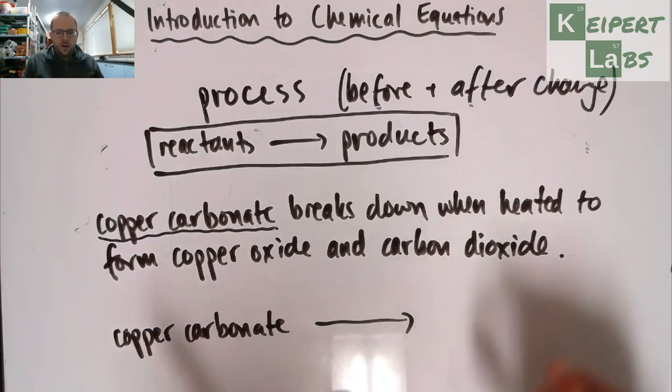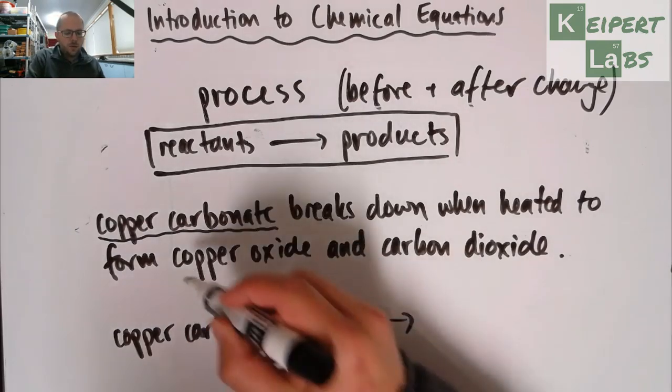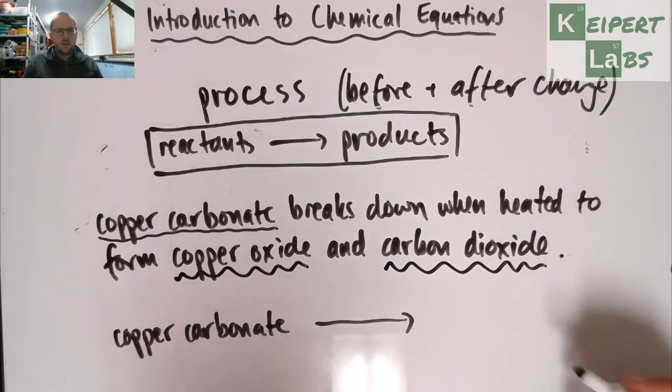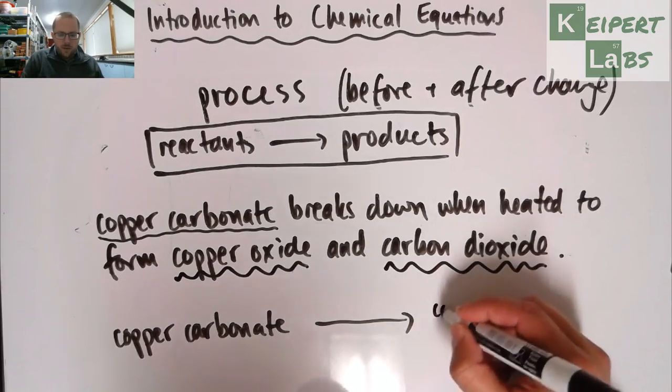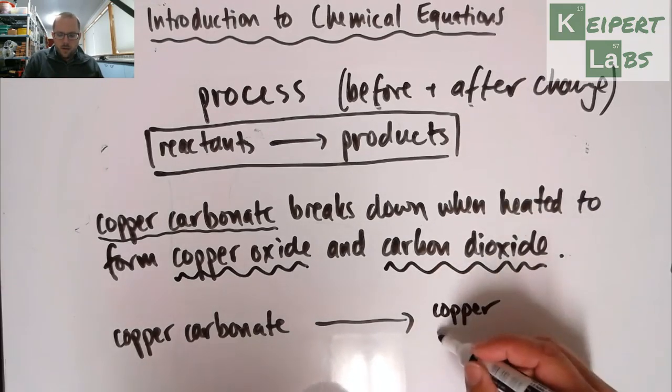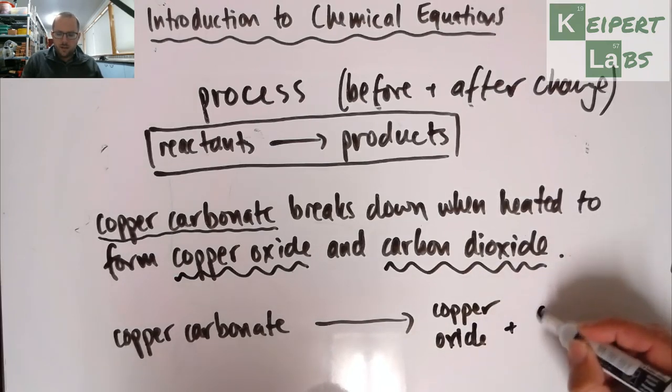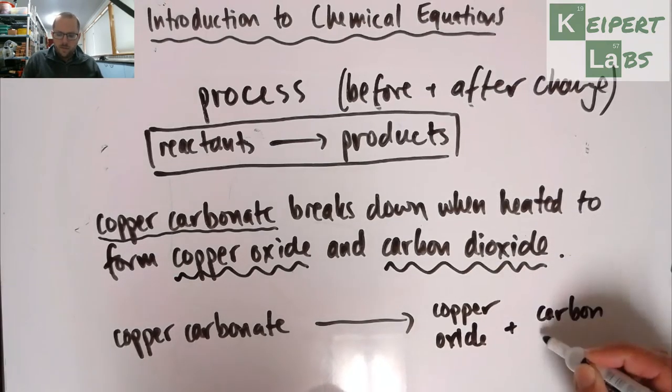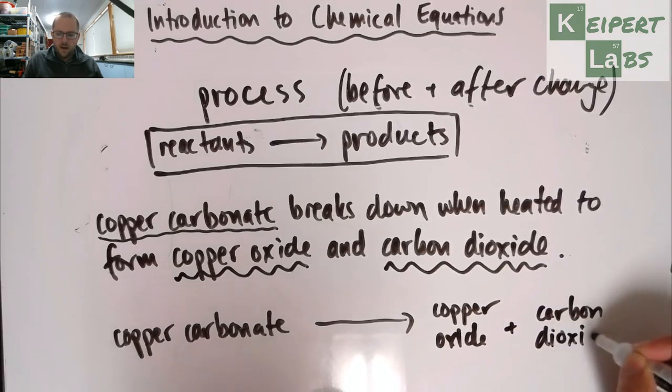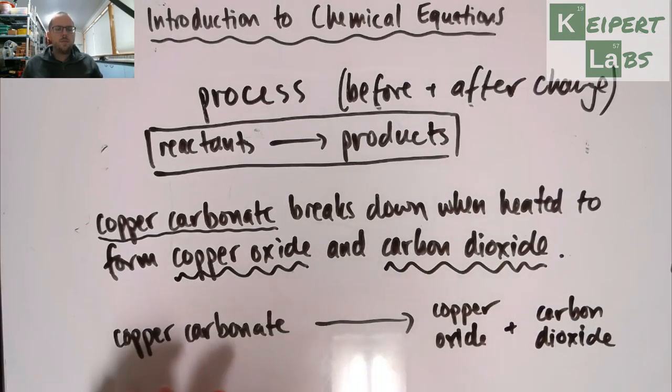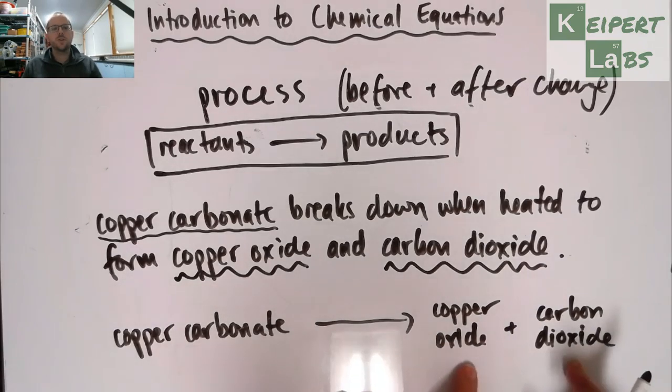And so then I have, when heated to, and I'm forming two products. Copper oxide and carbon dioxide. So I'm going to write those down over on the right-hand side. Now, just for space reasons, I'm just going to write them like this. So I have reactant forming products. This becomes those. So the atoms are rearranging. The atoms in this are rearranging to become these two new substances.